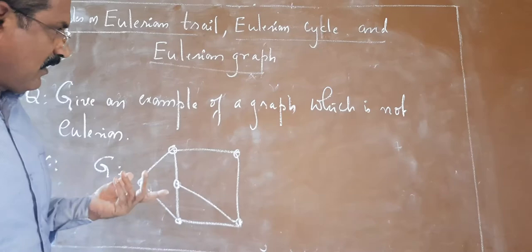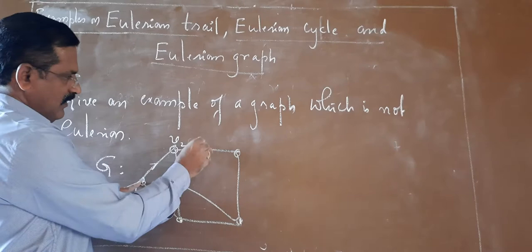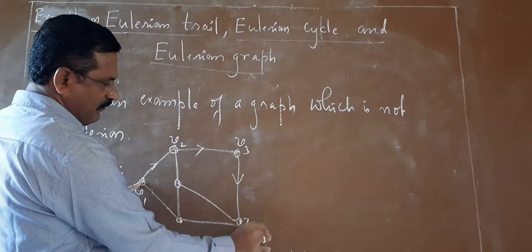We start at some point, say V1. Then we reach V2, then V3, then V4. Now the option is: you may come this way or another way.